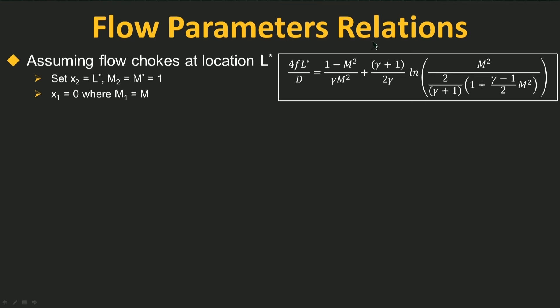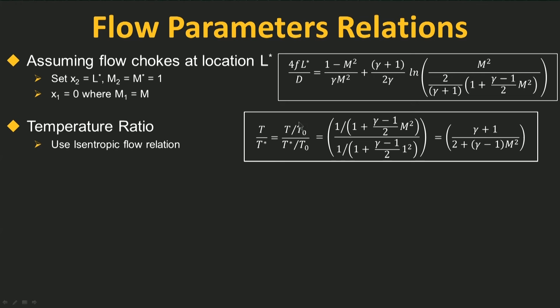Next, let's proceed trying to relate all the flow variables to the Mach number, much like what was done for isentropic flow and for the shock waves lectures. The temperature ratio T over T-star, where T-star stands for the temperature value at the location where the flow chokes and the Mach number is 1, can be rewritten as (T over T-naught) divided by (T-star over T-naught). We are able to do this because the flow is adiabatic, meaning T-naught is the same whether we are at location 1 or location 2. Therefore, we can directly apply the isentropic relations to rewrite this as 1 over (1 plus (gamma minus 1)/2 · M squared), and similarly (1 plus (gamma minus 1)/2 · 1 squared), simplifying into the final expression.